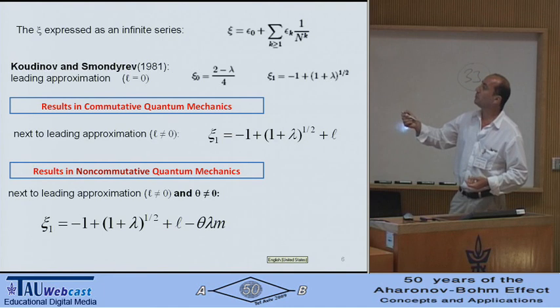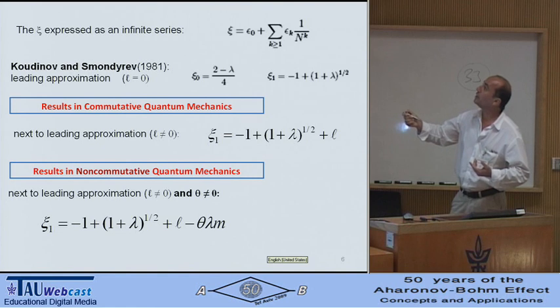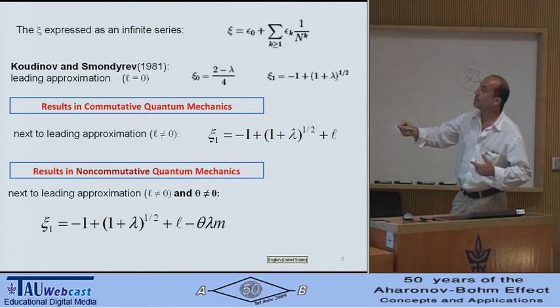In the usual commutative quantum mechanics, we extend Kodinov's 1981 work. There, he uses a leading approximation where the angular momentum is zero. I extended this calculation to the next leading approximation in the usual quantum mechanics.